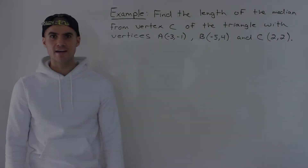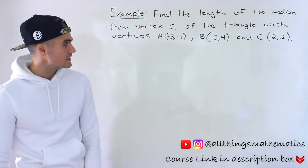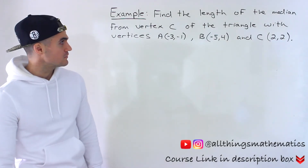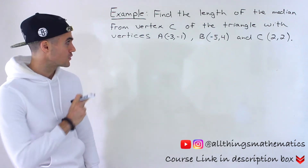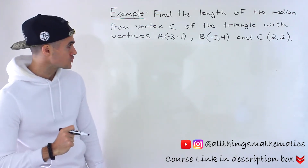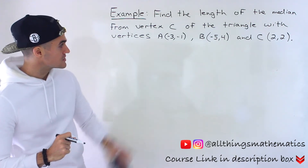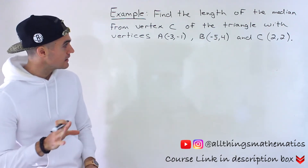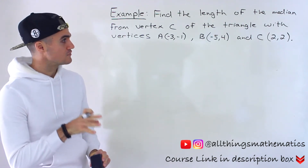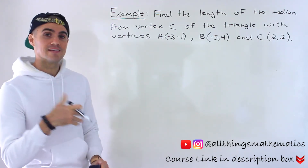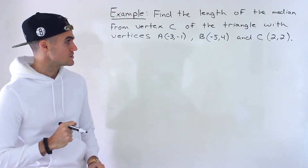Welcome back everyone. Patrick here, and moving on to the next question, we have to find the length of the median from vertex C of the triangle that has these vertices: A at negative 3, negative 1; B at negative 5 and 4; and C at 2 and 2.